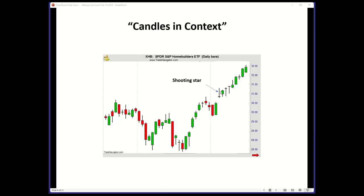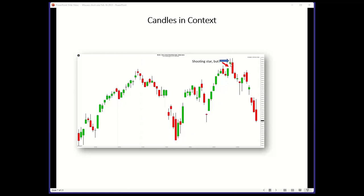Here is an example of somebody who understood what a shooting star was — long upper shadow, small real body, bottom end of the trading range, a bearish signal. But candles in context: if you sold here, this is where support is, and look what happened after. This information will really help separate you from the competition. In another example, a shooting star appeared, but the support area of the rising window was broken the next session — that's when you turn bearish. Some may also recognize this as a bearish engulfing pattern.